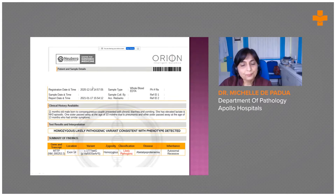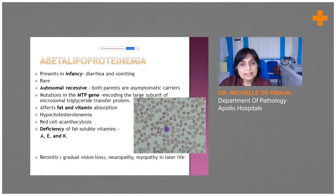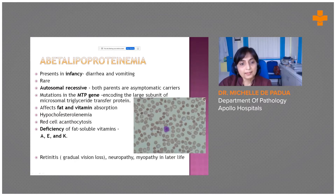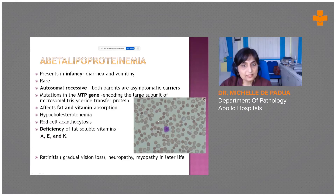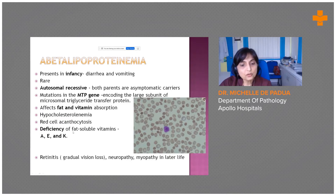The disease is autosomal recessive and presents at infancy with diarrhea and vomiting. It is a very rare condition in which both parents are asymptomatic carriers, with mutations in the MTP gene. It affects fat and vitamin absorption; the patient has low cholesterol. Acanthocytosis of red cells can also be seen — a simple test to request if you suspect this disease, due to defects in the cell membrane.